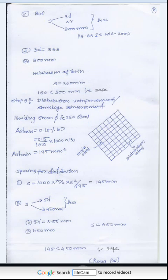Checking spacing limits for main steel from page 46 of IS 456-2000: maximum spacing is the lesser of 3d and 300mm. The three values are 160mm (calculated), 3d, and 300mm. The minimum of 3d and 300mm is 300mm. Since 160mm is less than 300mm, the spacing is safe.